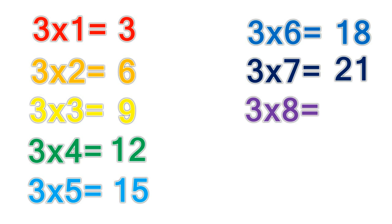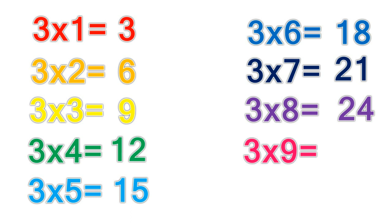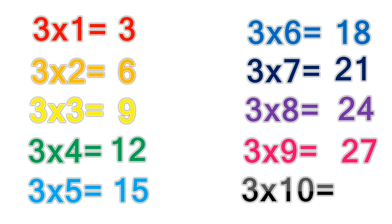3 times 8 equals 24. 3 times 9 equals 27. 3 times 10 equals 30.